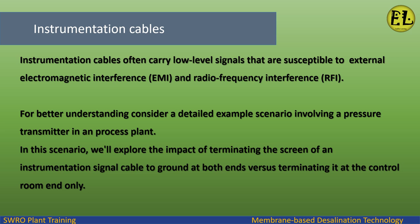Instrumentation cables often carry low-level signals that are susceptible to external electromagnetic interference (EMI) and radiofrequency interference (RFI). For better understanding, consider a detailed example scenario involving a pressure transmitter in a process plant, exploring the impact of terminating the screen at both ends versus terminating it at the control room end only.